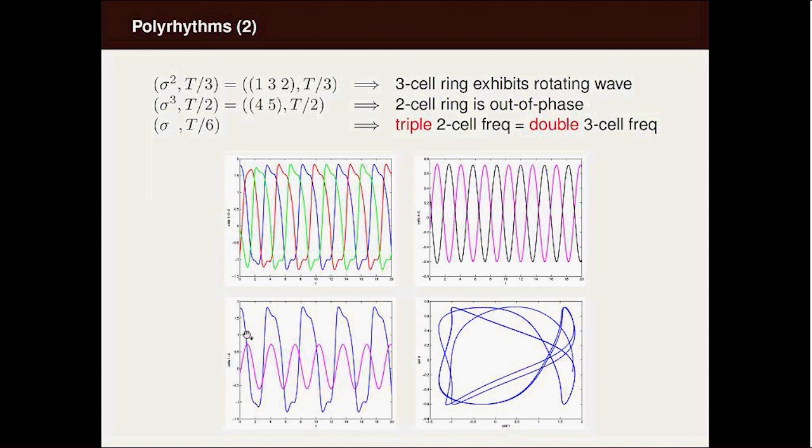What you'll see when you get such a solution is that the top three nodes are a third of a period out of phase, the two nodes are half a period out of phase on the bottom, but three times the frequency of the blue is the frequency of the red, so you get a periodic solution. These kinds of polyrhythms come about in such networks.